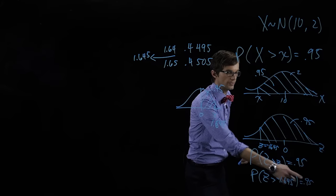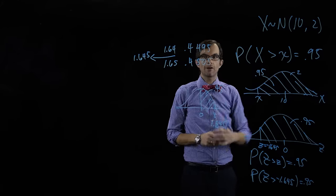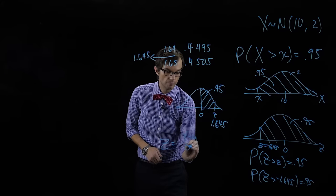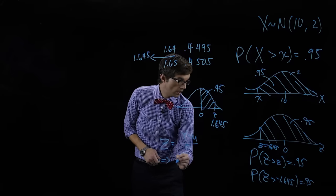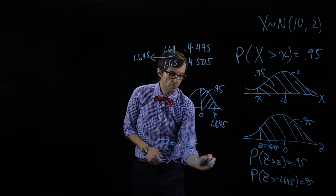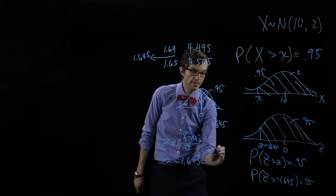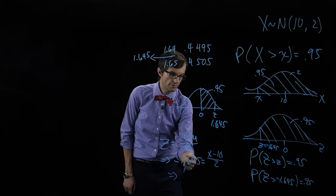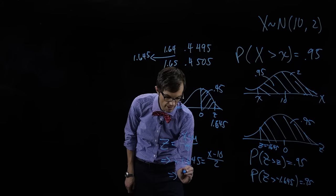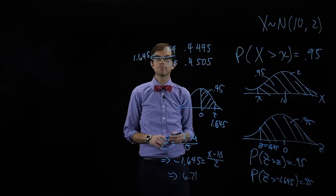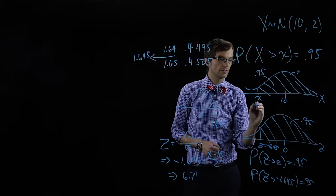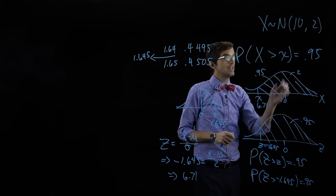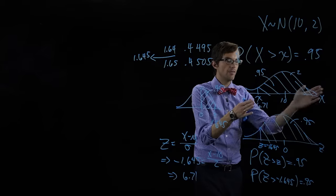Now we have our z value of negative 1.645 associated with this probability, and we just need to use the z-score formula and calculate backward. Using z = (x − μ) / σ, we get negative 1.645 = (x − 10) / 2. Solving for x — multiplying both sides by two and adding ten — gives x = 6.71. So the value on the x axis is 6.71, and the probability that x is greater than 6.71 is 0.95. Ninety-five percent of observations of x lie above 6.71.